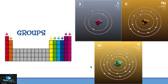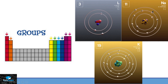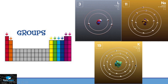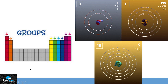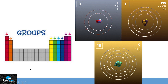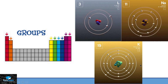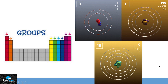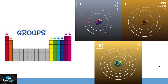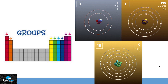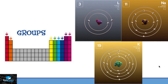For example, we can see three different types of elements — lithium, sodium, and potassium — all present in group 1. As you can see, lithium, sodium, and potassium all have one electron in their outermost shell, which is why their chemical properties are quite similar to each other.